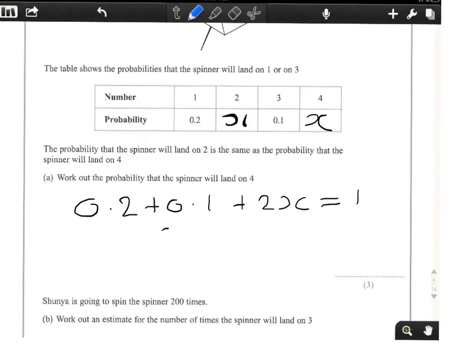We should very quickly realize that 2x would therefore equal 0.7, and that will give us x equals half of 0.7, which is 0.35.